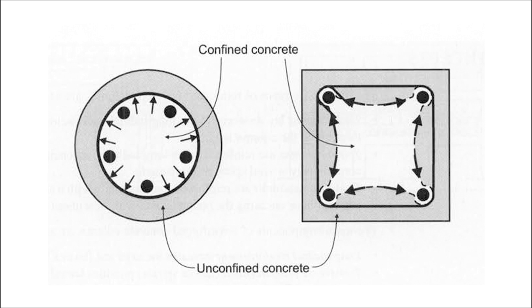Now the longitudinal reinforcement, assuming that the ties provided are adequate in order to brace and confine that longitudinal reinforcement, it contributes to the load carrying capacity of the column in two ways. It increases the column's compressional capacity and additionally, it also provides flexural capacity.